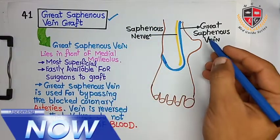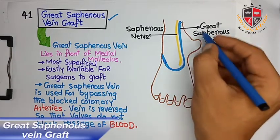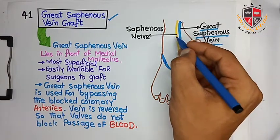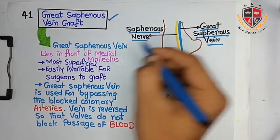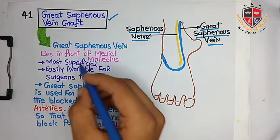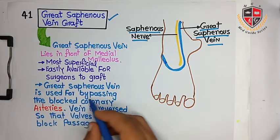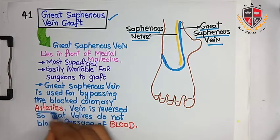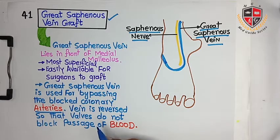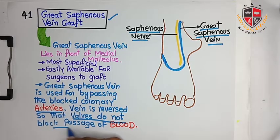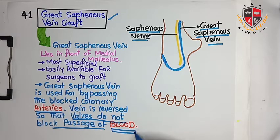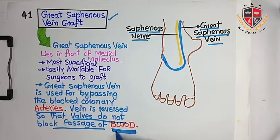The next clinical is the great saphenous vein graft. The great saphenous vein is located in front of the medial malleolus, and in front of it runs the saphenous nerve. The great saphenous vein is the most superficial and is easily available for surgeons to graft. It is used for bypassing blocked coronary arteries, with the vein reversed so that valves do not block the passage of blood.